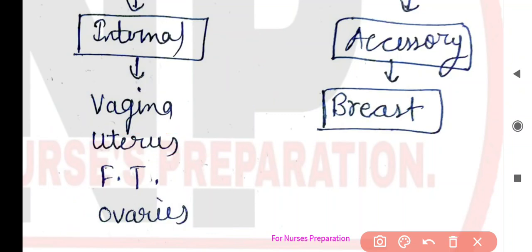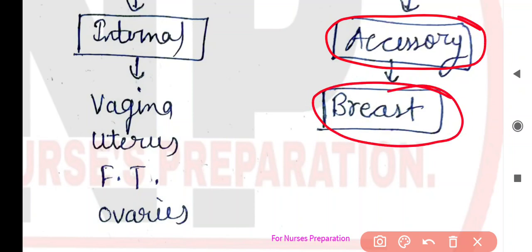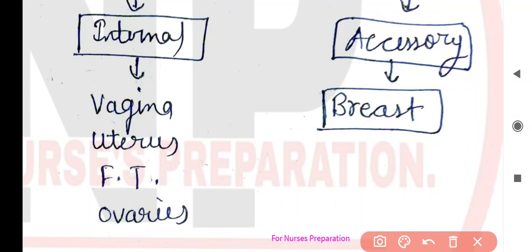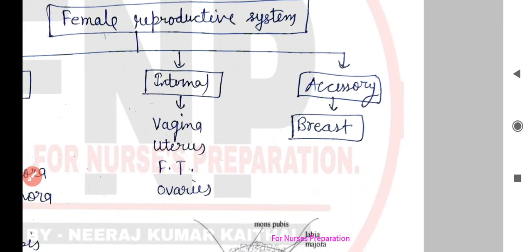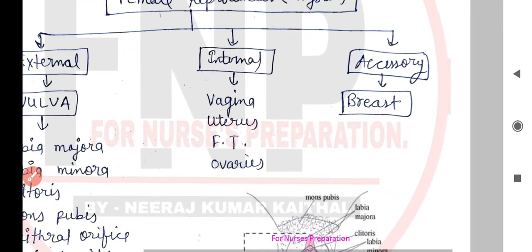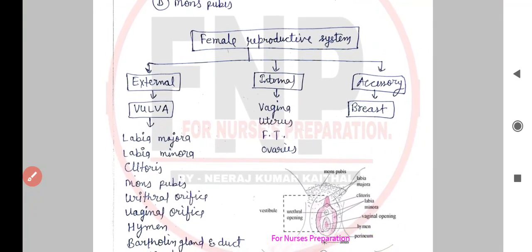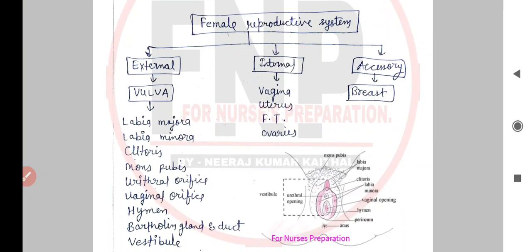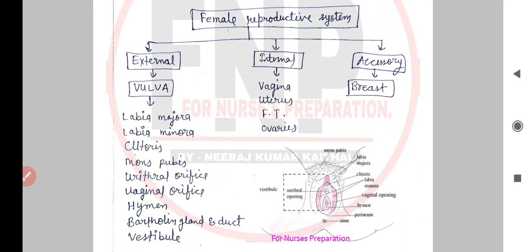Third aata hai accessory organs — iske antargat hum breast ko include karte hain. Accessory female reproductive organs ke antargat breast ko include kiya jaata hai. Yeh tha hamara aaj ka video, thank you so much for watching this complete video, all the best.